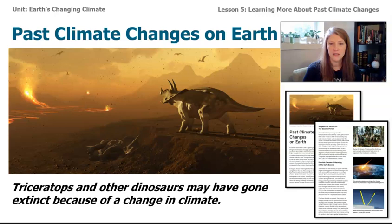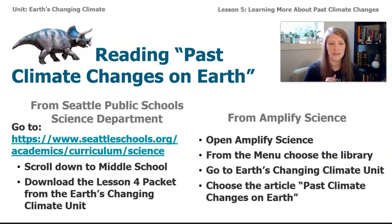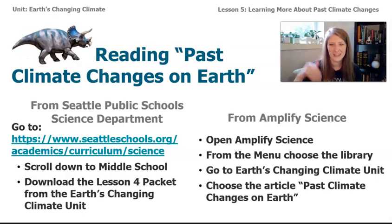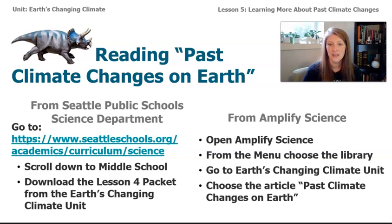If you need a copy of the article, or haven't read it yet, I'd encourage you to do that before starting this lesson. You can get a copy from the lesson 4 packet at seattleschools.org/academics/curriculum/science — scroll down to middle school and download the lesson 4 packet for Earth's Changing Climate Unit. Or go to your Amplify Science account, select the library from the menu, and choose the article called Past Climate Changes on Earth from the Earth's Changing Climate Unit.